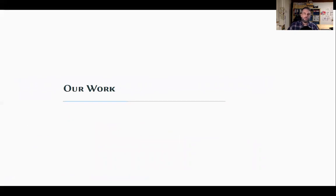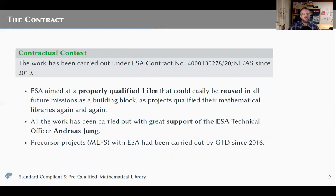We did all this work for the European Space Agency, as ESA wanted to have a properly qualified libm that could easily be reused in future missions. Up to now, it has been quite common that projects needed to qualify mathematical libraries again and again, so the goal was really to avoid that. This work was supported throughout by our technical officer Andreas Jung. We based the LIB-MCS on work carried out for ESA since 2016, with a special mention given to the MLFS library which included a subset of the functions now in the LIB-MCS.